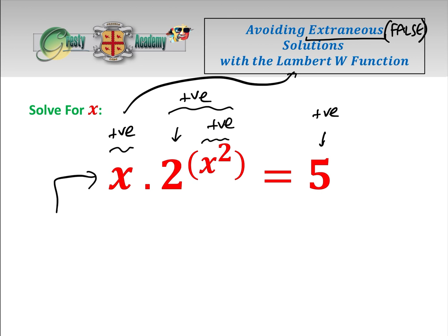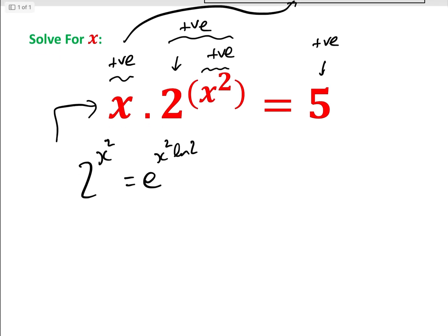Now let's actually solve this equation. 2^(x²) = e^(x²·ln2), and therefore we can rewrite the equation as x·e^(x²·ln2) = 5.